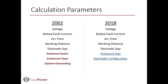Calculation parameters: these represent the system characteristics used to calculate arc flash. Voltage, bolted fault current, arc time, working distance, and electrode gap all remain from the original standard. Distance factor from the original standard has been replaced with enclosure size, with variables of height, width, and depth. Enclosure type from the original standard has been replaced with electrode configuration, which further expands the original parameter to also include electrode orientation. System grounding from the 2002 version is no longer considered.